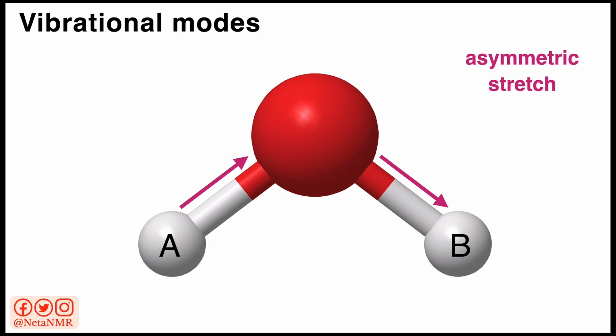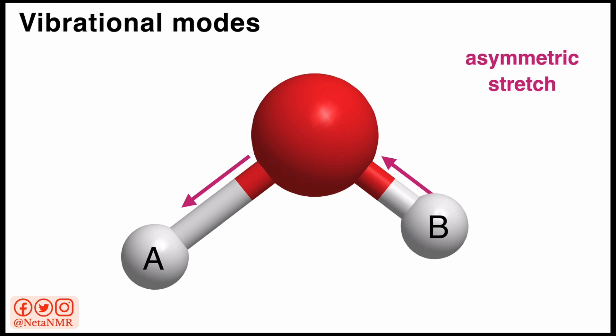So let's see what that looks like. Now you've seen how when the bond between hydrogen B and the oxygen atom is longer, the bond between hydrogen A and the oxygen gets shorter. And the same happens when the bond between hydrogen A and the oxygen atom is longer — then the bond between hydrogen B and the oxygen atom becomes shorter.